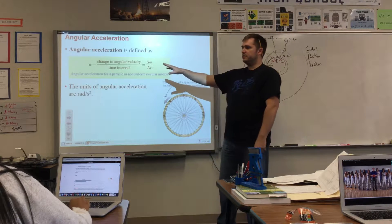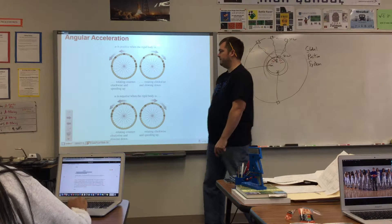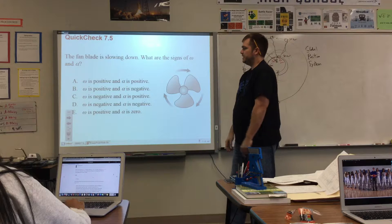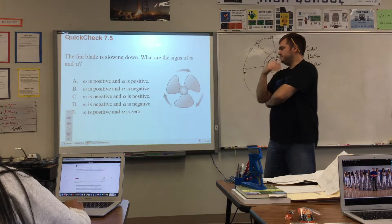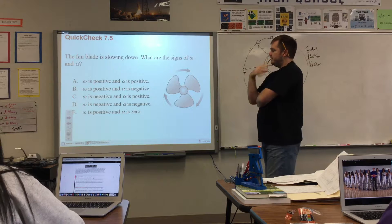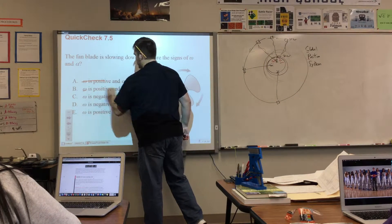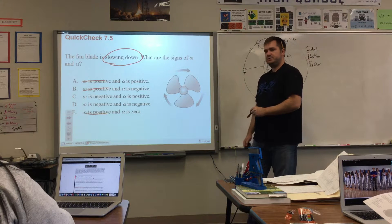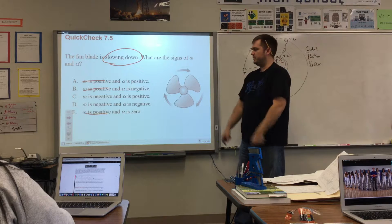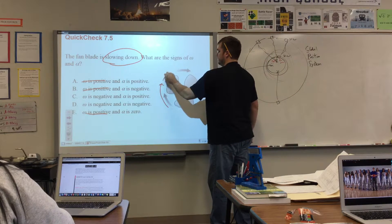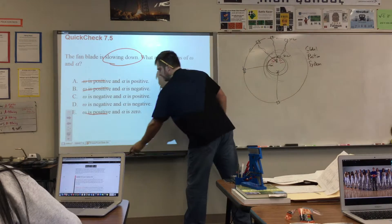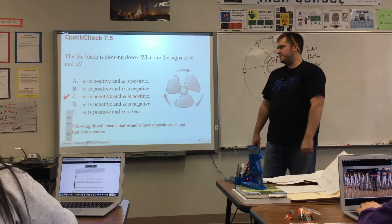Angular acceleration is the change in angular velocity over time. For a fan with negative omega that is slowing down, we need to determine the sign of angular acceleration. Since the fan is rotating in the negative direction but slowing down, the angular acceleration must be positive — they have to be opposite signs. So omega is negative, alpha is positive.